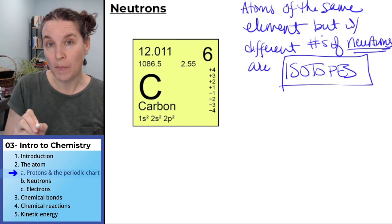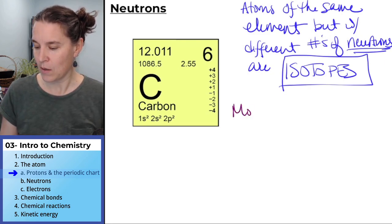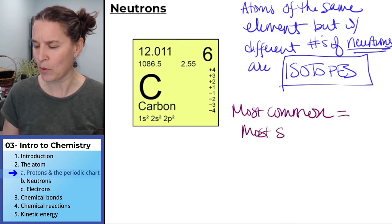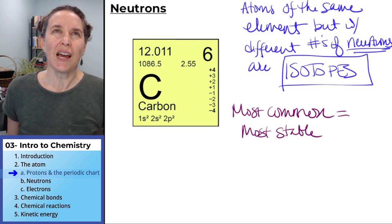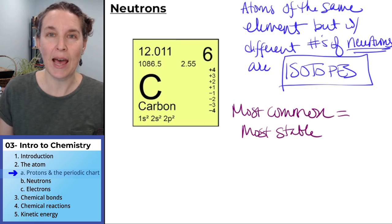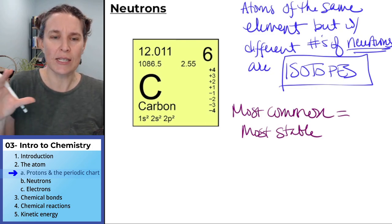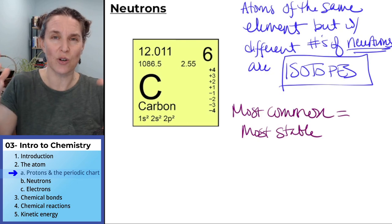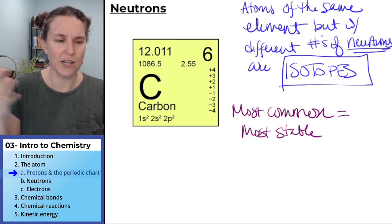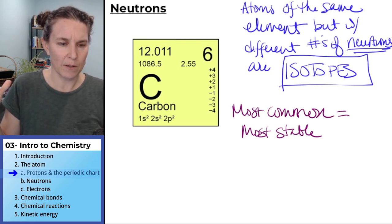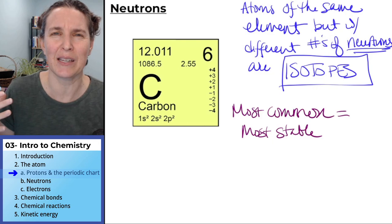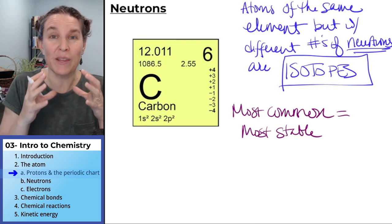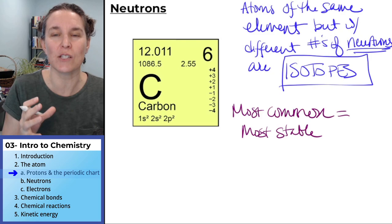The most common isotope, let's do that. The most common is the most stable. And I want you to think about that for a second. Atoms are like anything else. There is a stable state where the number of neutrons, the number of protons, and the number of electrons are energetically efficient, the number is right, and the molecule, the atom, is stable. The isotope is stable.